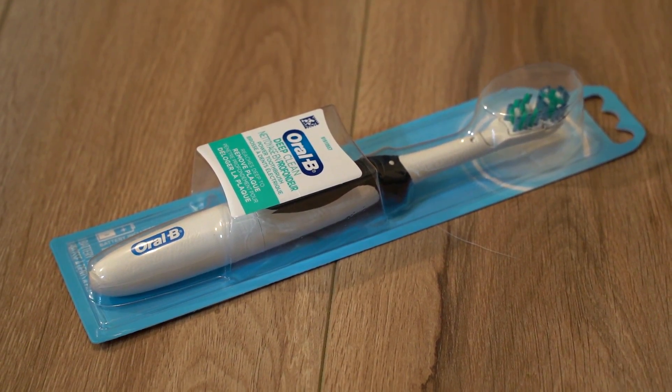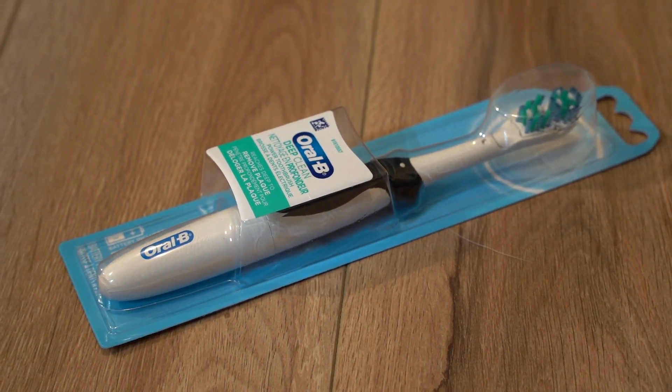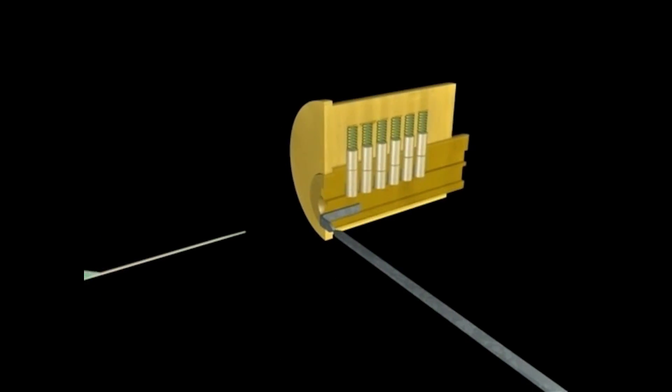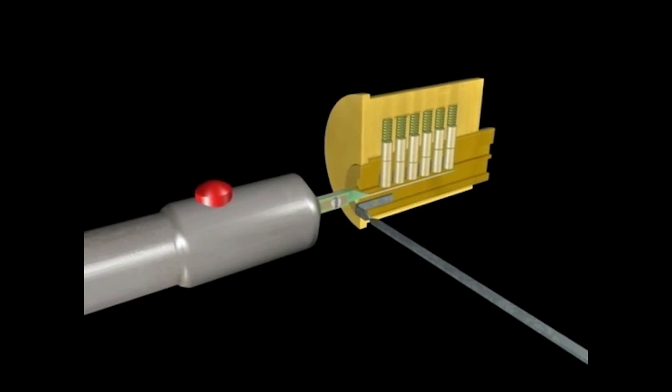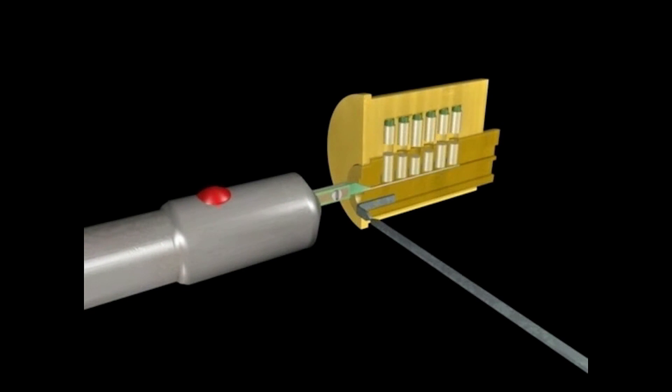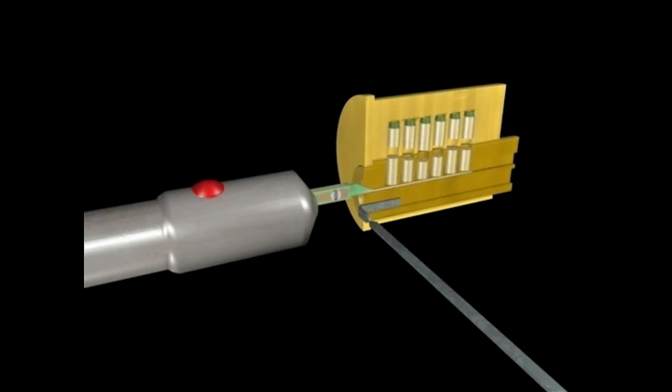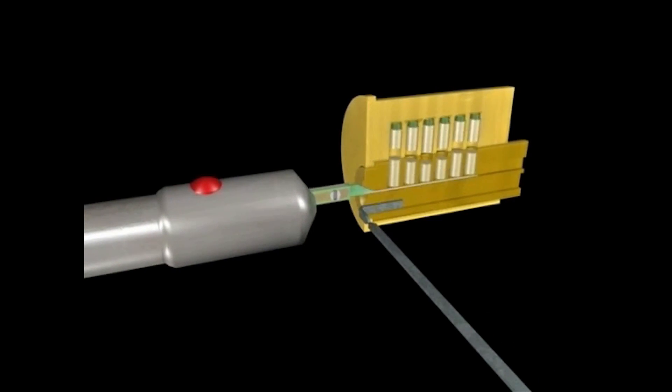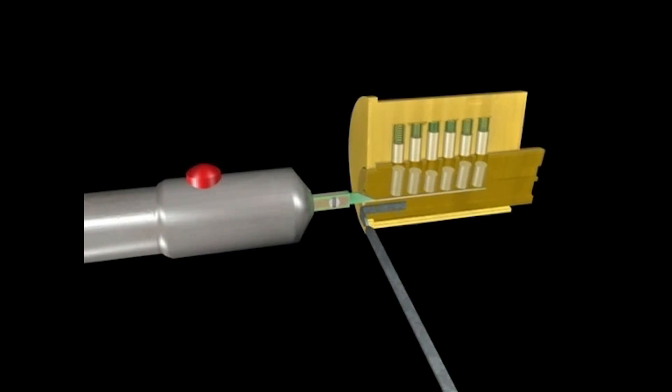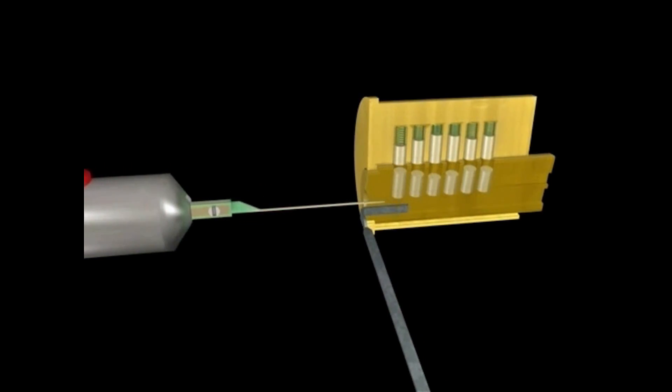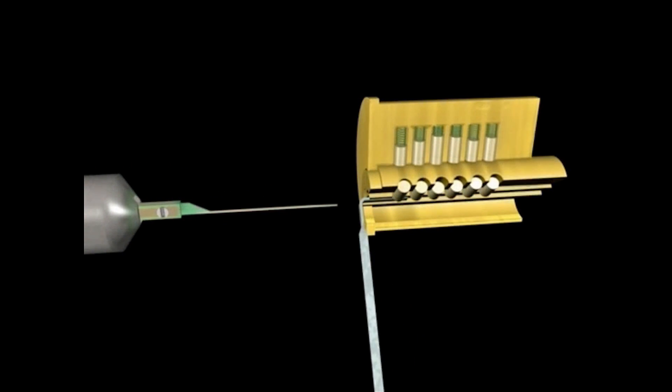This video is about making an electric lock pick from a cheap electric toothbrush. An electric lock pick works by vibrating the metal pick tip which pushes up on the pins in the lock. A tension tool is used to apply a small amount of turning pressure to the plug of the lock. When all of the top pins in the lock are above the shear line, the turning pressure will cause the lock to turn and open.